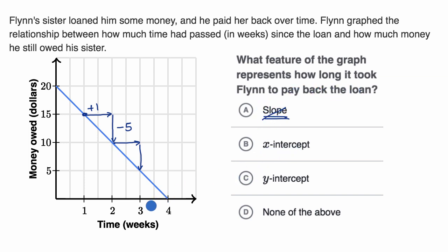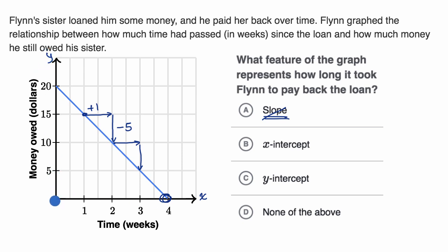The x-intercept is where the graph intersects the horizontal axis, which is often referred to as the x-axis. Another way to think about it: the x-intercept tells us what the x value is when our vertical value, our y value, is equal to zero.